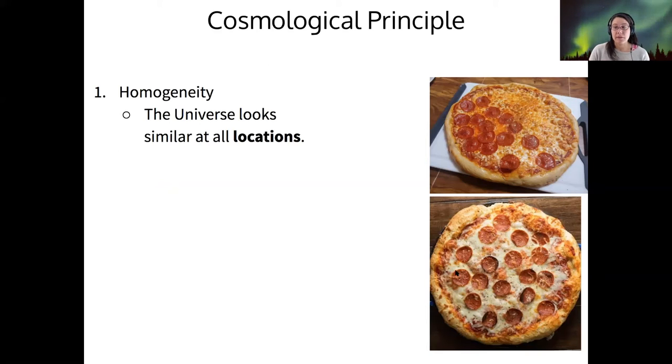So that's one piece of the cosmological principle—we think that the universe should look the same at all locations. If I take some sample in one area of the universe of galaxies, it should look the same as any other sample that I take in any other location.